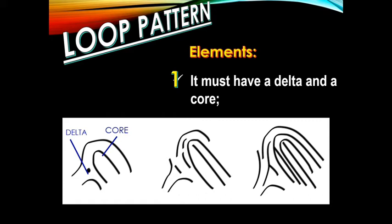In our first example, we have here the dot ridge. Since this is a dot ridge, this will be our delta, and our core will be located here since we do not have any rod or bar. So the location of our core is on the farthest shoulder of a recurving ridge farthest to the delta. On our second example, since this is our first obstruction, this will be the location of our delta, and this will be the location of our core on the top or summit of the rod.